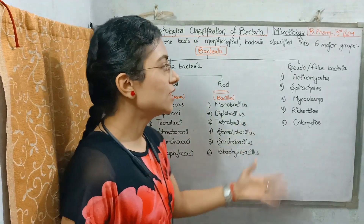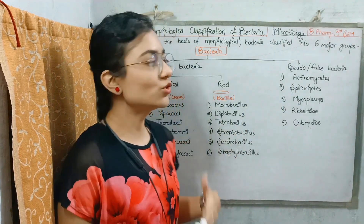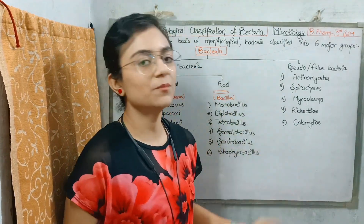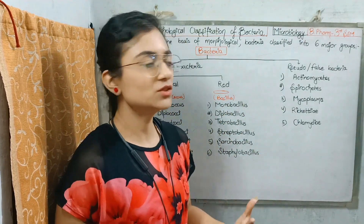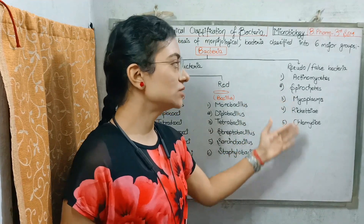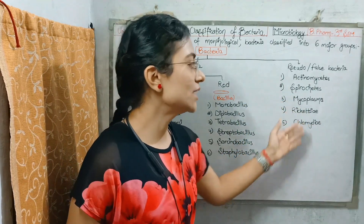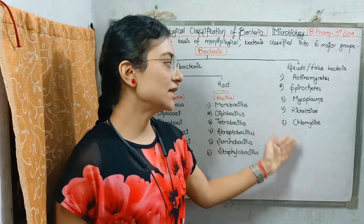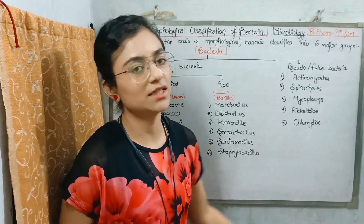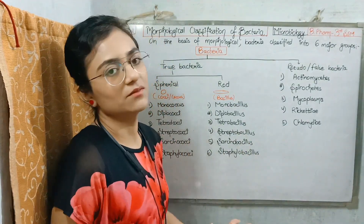If we talk about false bacteria, they are of 5 types. First is Actinomycetes, second is Spirochetes, third is Mycoplasma, fourth is Rickettsia, and fifth is Chlamydia. We will learn about each of these.